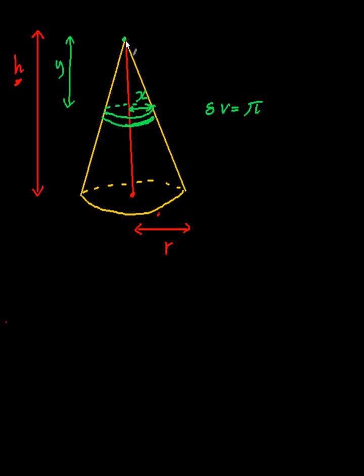So from this point, it's at a distance of y from the top. So it's going to be pi x squared delta y. What I'm saying is that this thickness over here is delta y. That's what I meant by a coin-shaped cylinder. This is a tiny little disc that I'm taking.